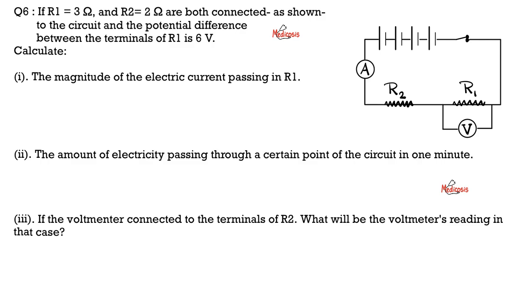And here is one more. If the first resistor has a resistance of 3 ohm, the second resistor is 2 ohm. Both are connected in this manner, and the potential difference between the terminals of R1, which is measured by the voltmeter, is 6 volts.